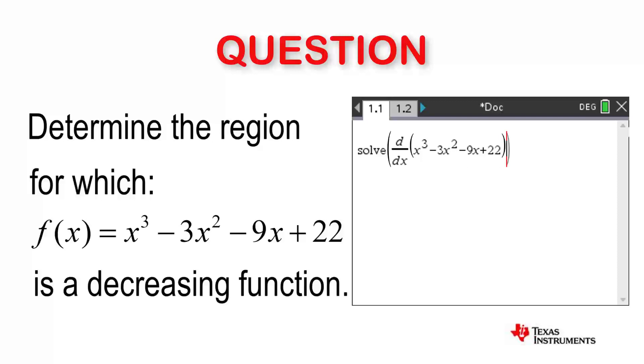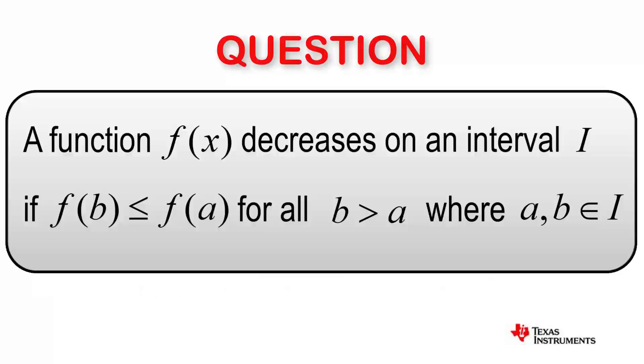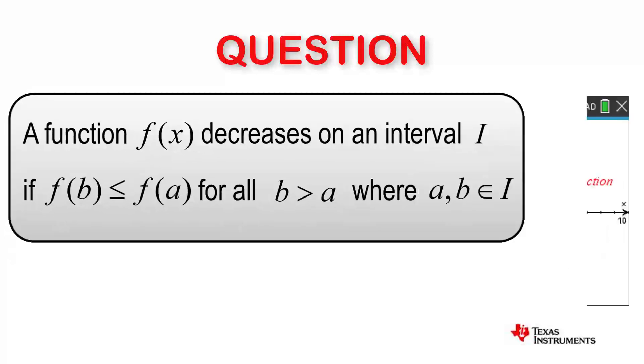So what about the endpoints? Do we include them or not include them? As we have been asked to determine the region for which the function is decreasing, we return to our original definition. The endpoints satisfy our definition, so therefore we include them in our answer.